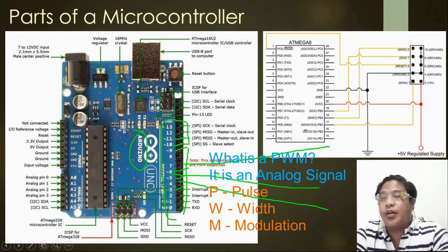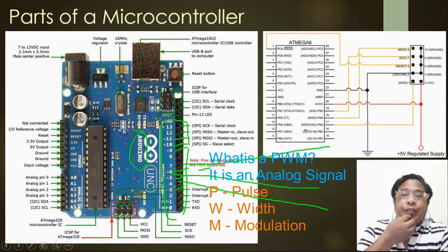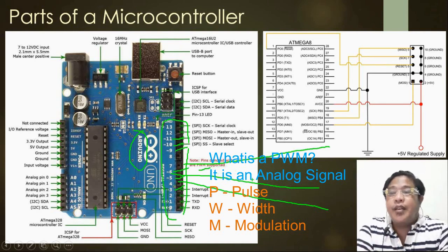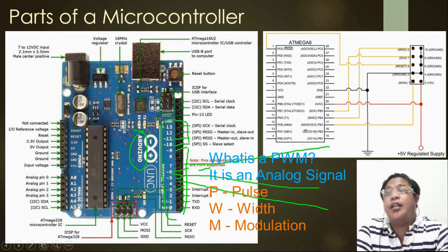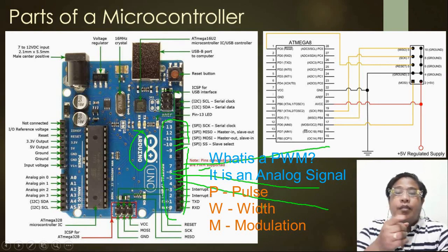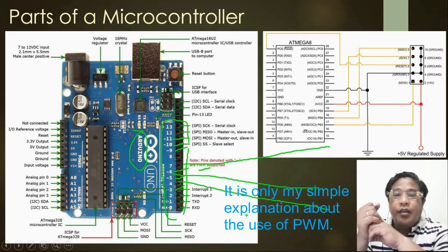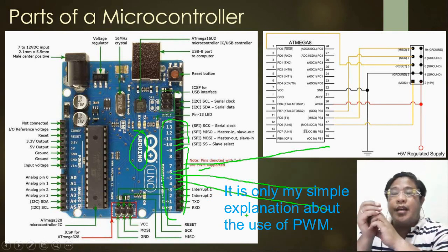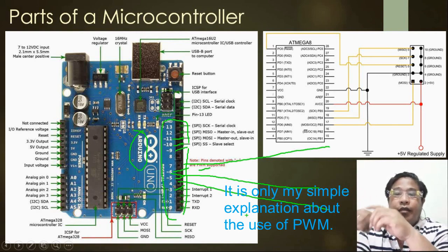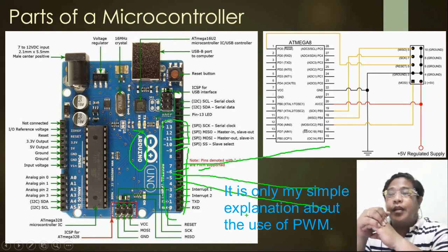What is the use of PWM? The use of PWM is to make the DC motor run. Without a PWM, the DC motor cannot rotate. So PWM is the one responsible to let the motor move and run, depending also on the program.